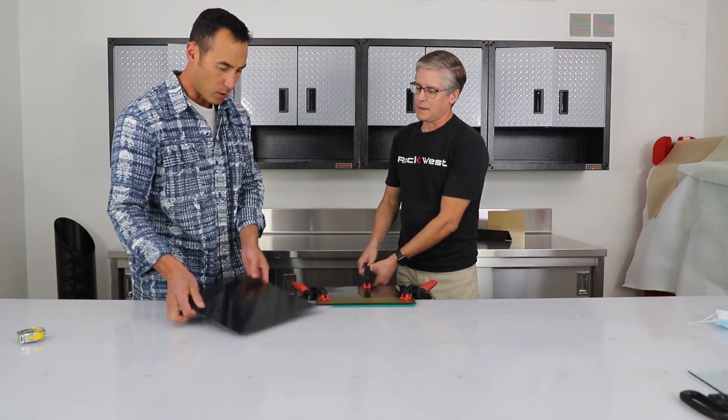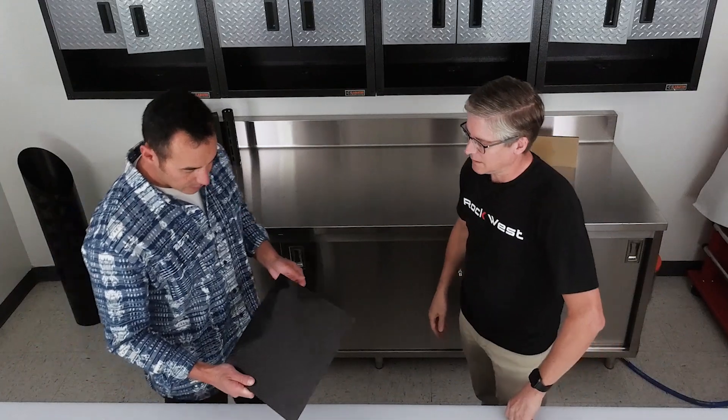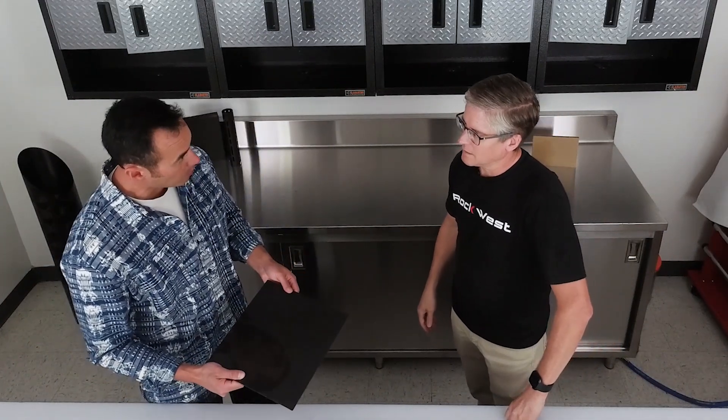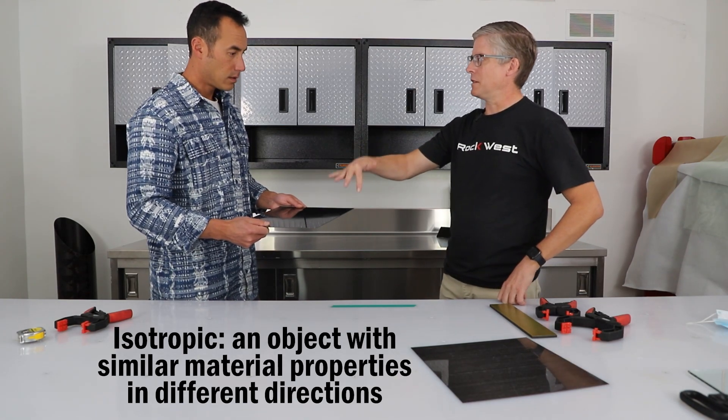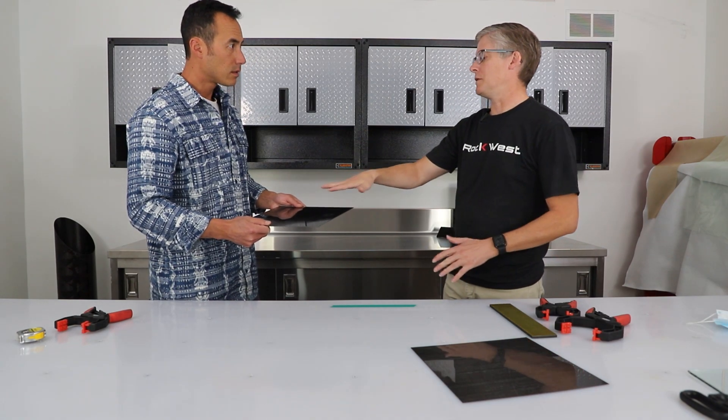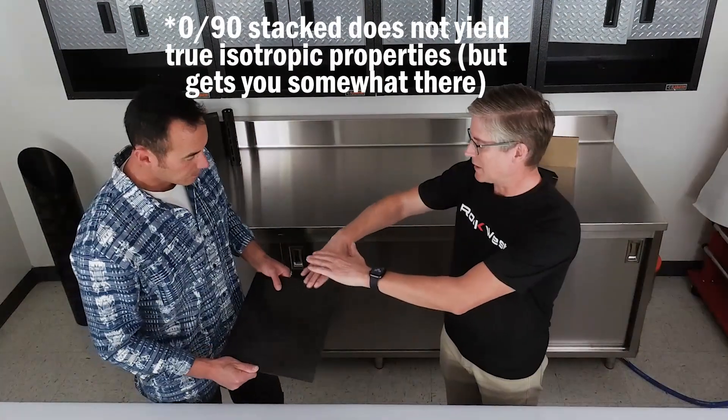Right, this is our fabric isotropic plate. This one was six plies again, but all the plies are laid up in a zero-90 configuration, which means each ply has a zero and a 90 fabric in it already. And then we just laid those on top of each other for six plies.